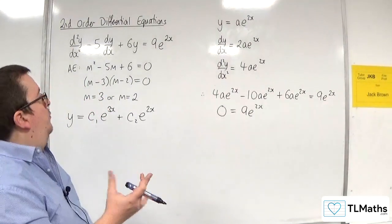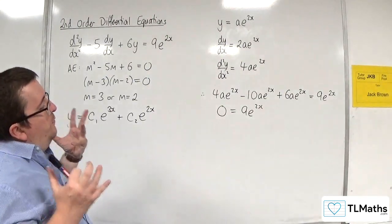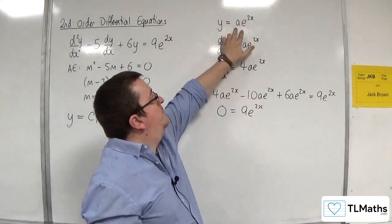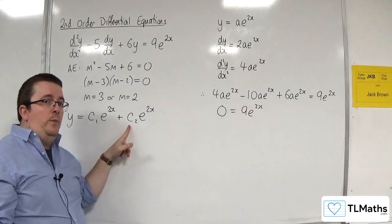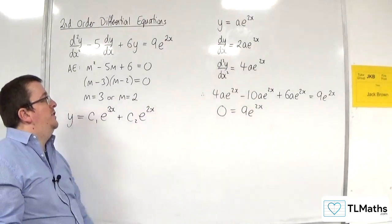Now, why didn't this work? Why did I get 0? Well, the reason why I got 0 was because I know that that is of the same form as that. I've just replaced the a with c2. It's still the same - it's a constant times e to the 2x.